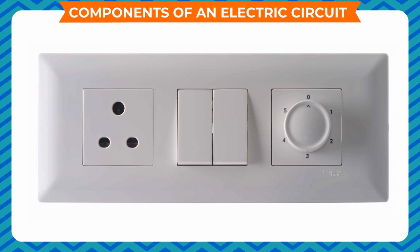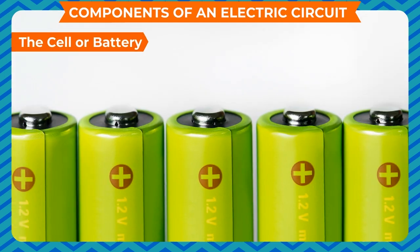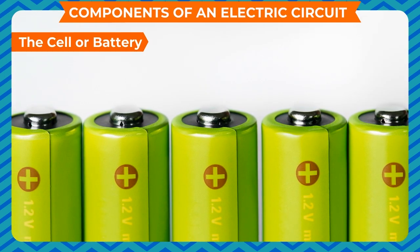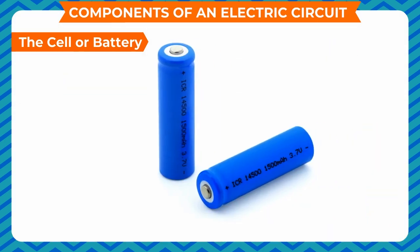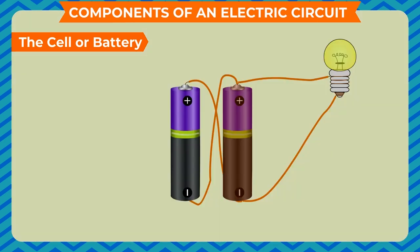Components of an electric circuit. The cell or battery: a cell is the source of an electric circuit. It has a positive terminal and a negative terminal. For most applications, we need more than one cell, so we connect two or more cells together. The positive terminal of the first cell is connected to the negative terminal of the second cell and so on. Such a combination of two or more cells is known as a battery.